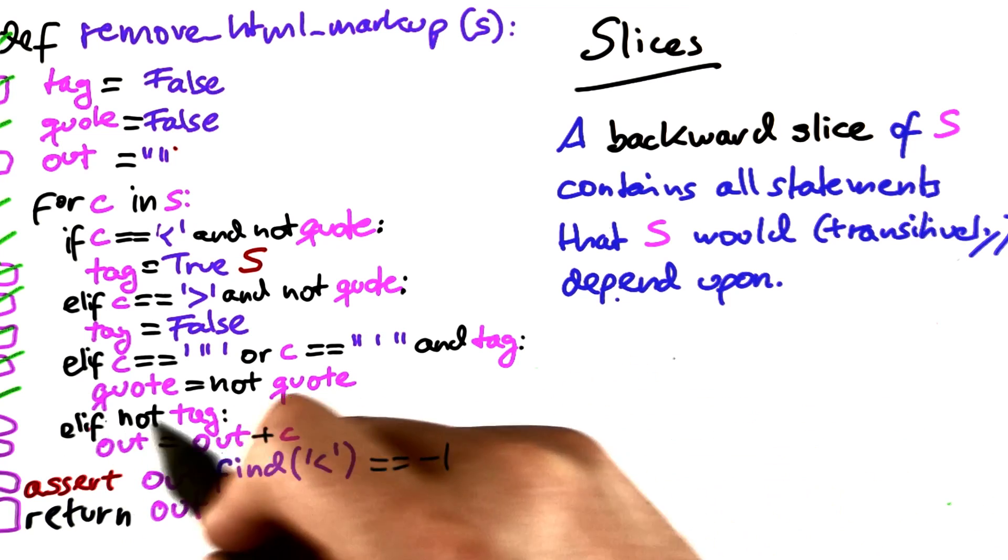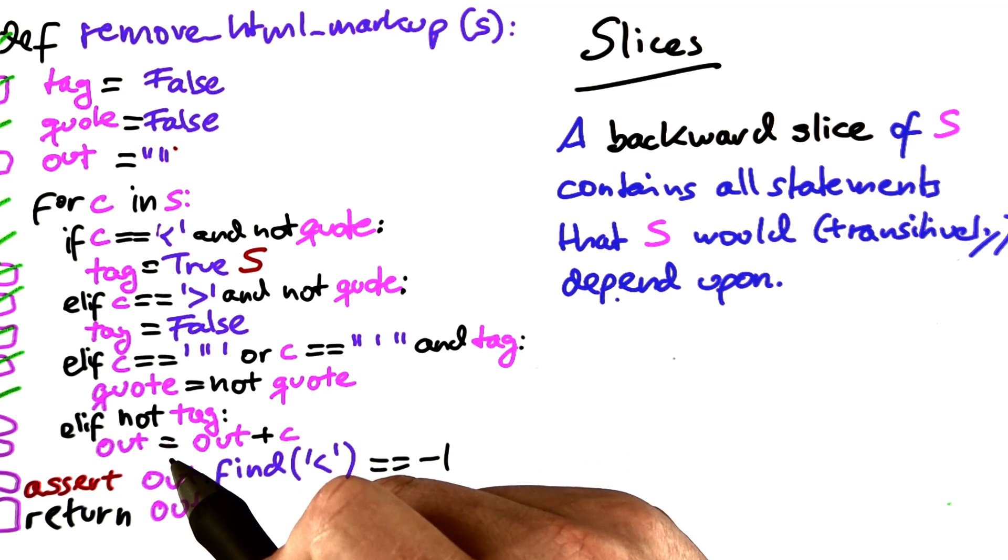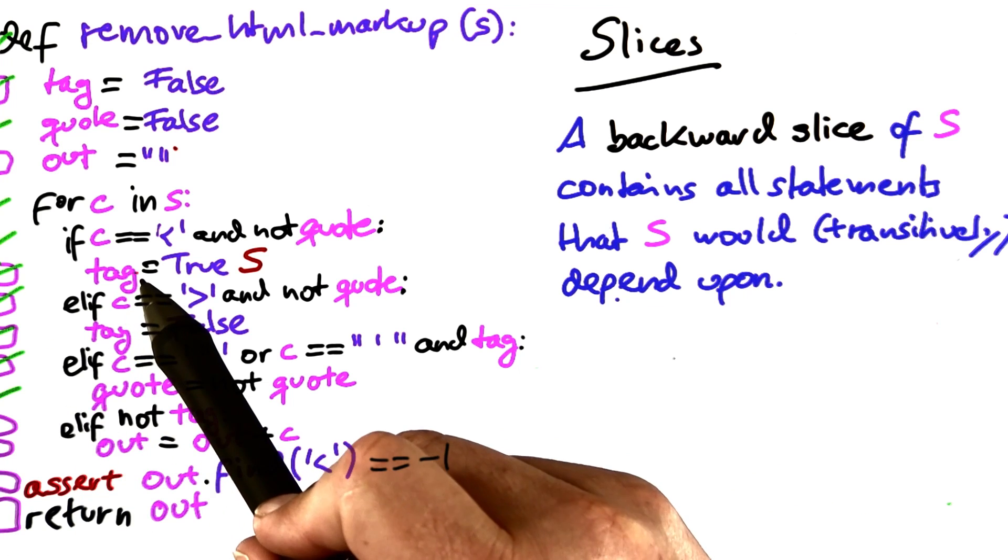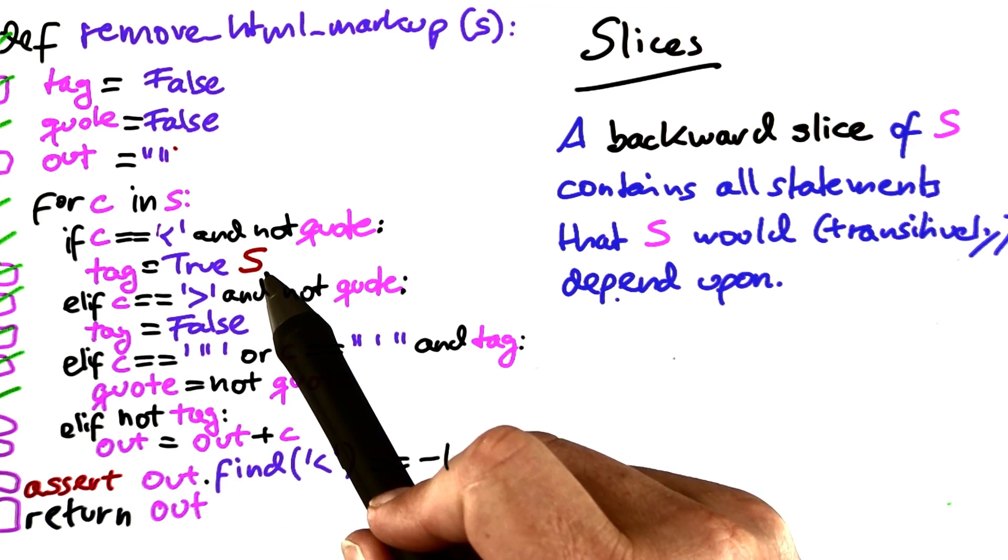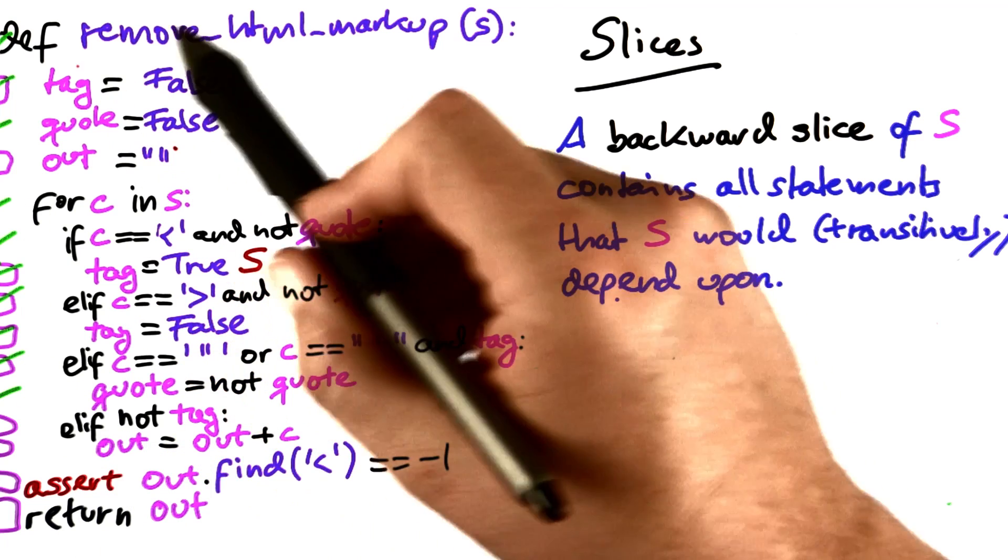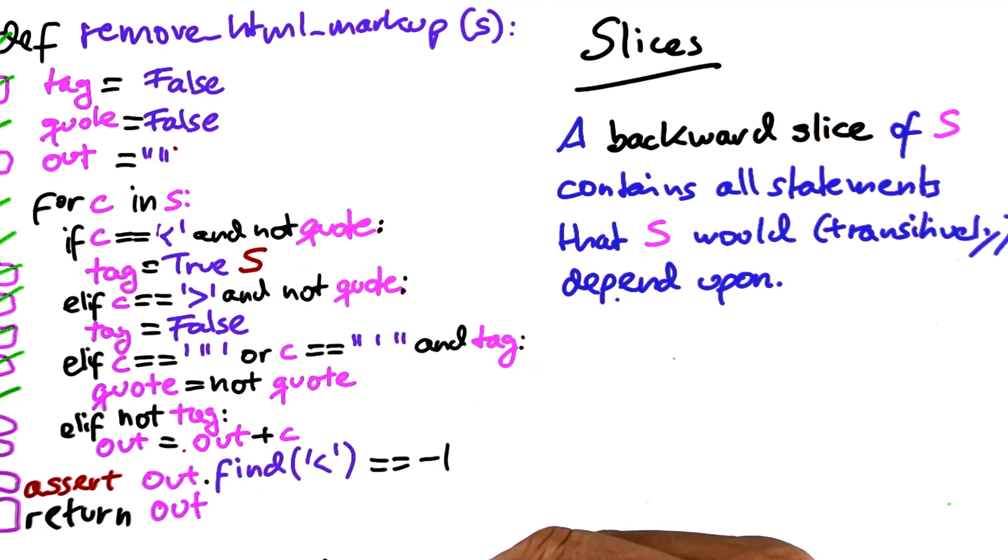But nothing of what happens to out actually has any effect on tag at this point. And this is precisely what the backwards slice gives us.